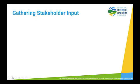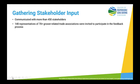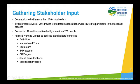After the initial draft was approved by the Coalition Oversight Committee, we communicated with more than 450 different stakeholders. 140 representatives of more than 70 grower-related associations were invited to participate in the feedback process. We had 18 webinars attended by more than 250 people. Based on that feedback, we put together specific working groups to deal with issues of definition, international trade, regulatory, IP protection, how we talk about off-targets, social considerations, and the verification process.